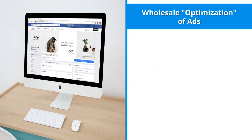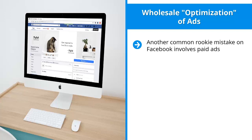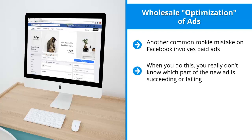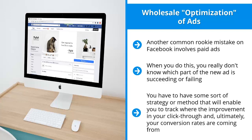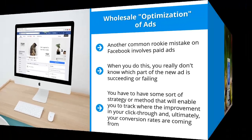Mistake seven: wholesale optimization of ads. If you notice that one of your ads is simply not performing, it's very tempting to come up with a brand new ad by completely replacing it with something that looks totally different. When you do this, you really don't know which part of the new ad is succeeding or failing — you're taking shots in the dark. You have to have a strategy that enables you to track where improvements in click-through and conversion rates are coming from. Simply swapping out ads in whole doesn't give you the data you need to make effective decisions.